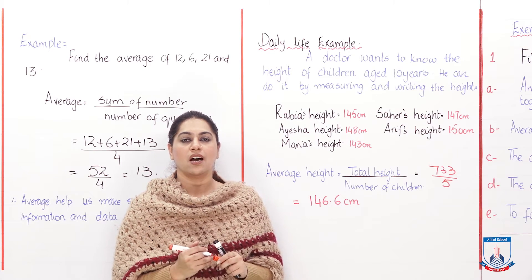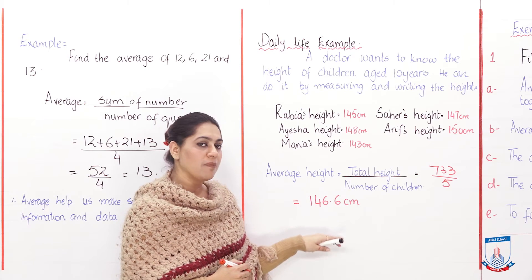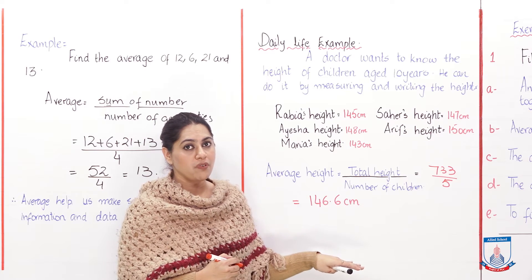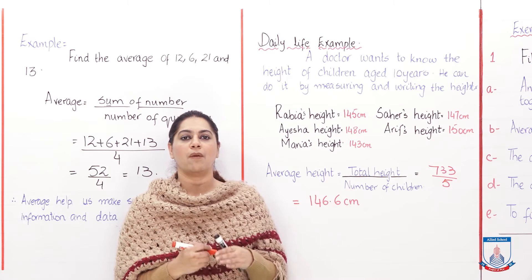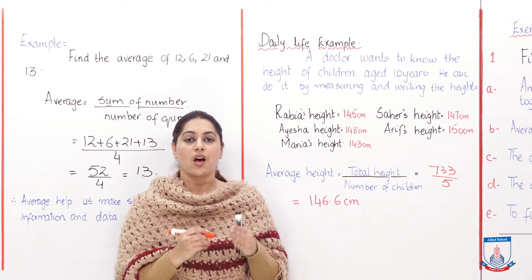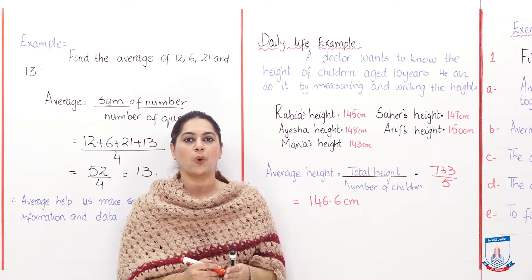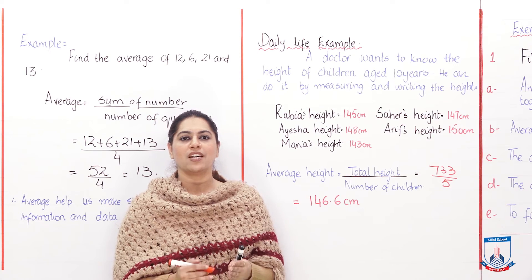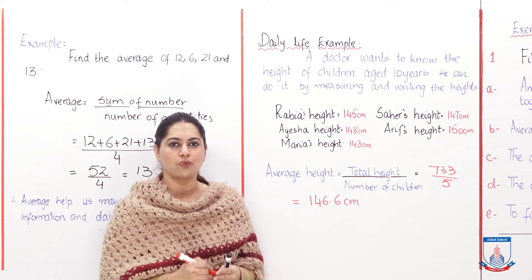So students, what does this tell the doctor? This tells him that if the height of those children is less than this, that means they are below average height students or children. And if those children's height is more than this, that means they are above average height students. So I hope students that you got the concept of average and you know how important it is to use it in your daily life. So now we are done with this average, now moving towards the exercise question. Let us move towards the next board.